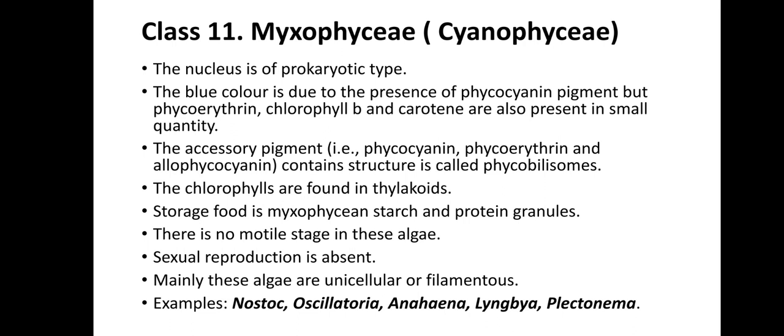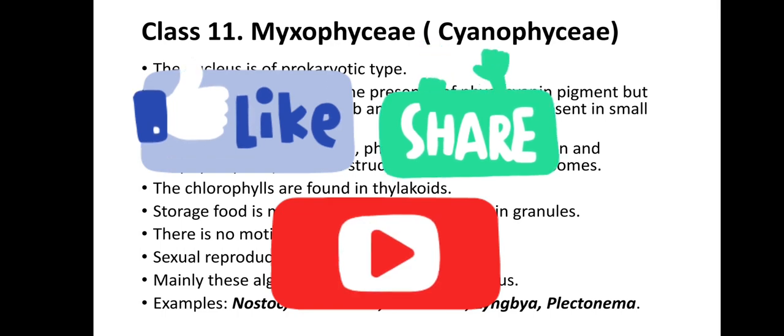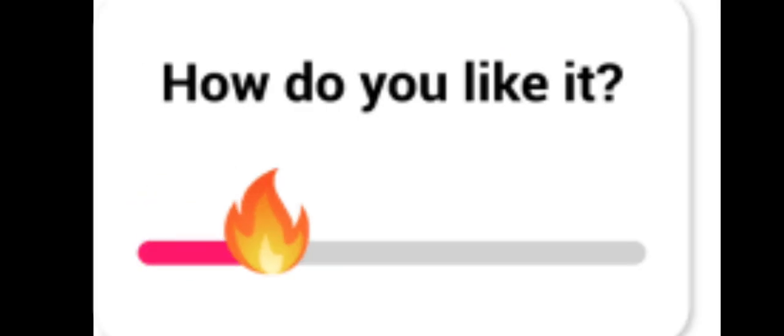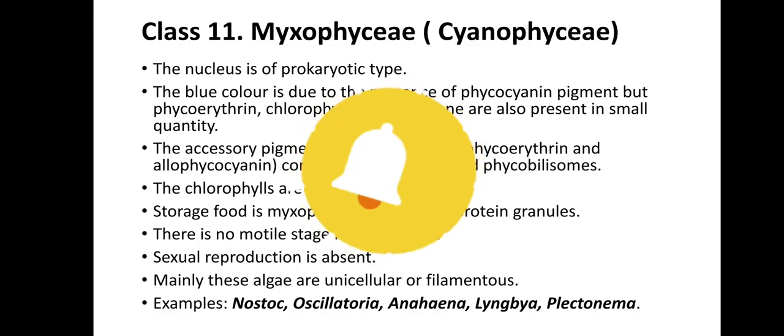So these are the 11 classes proposed by Frisch, who divided the division Algae into 11 classes. In my next video, I will discuss the different modes of reproduction present in algae. Stay tuned and enjoy my video. Thank you.